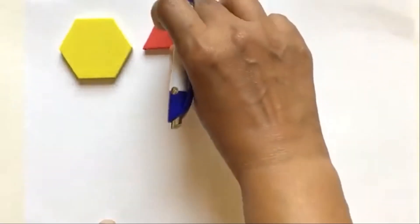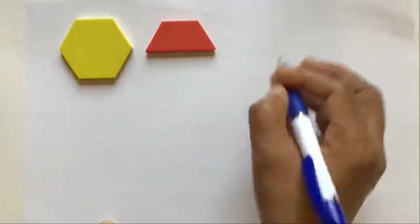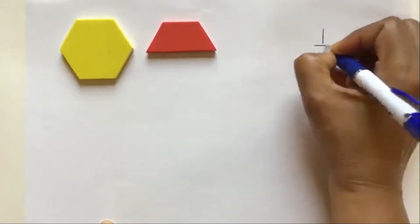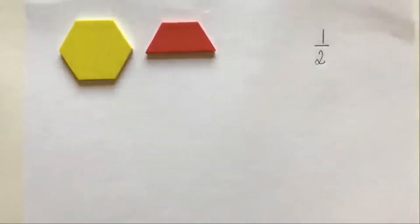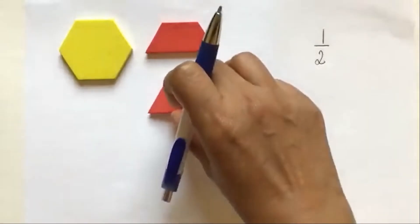Let's use this hexagon as one whole. I need two of these red trapezoids to make one whole. So in this case, if I only give one of the trapezoids, it's going to be one half of the hexagon.